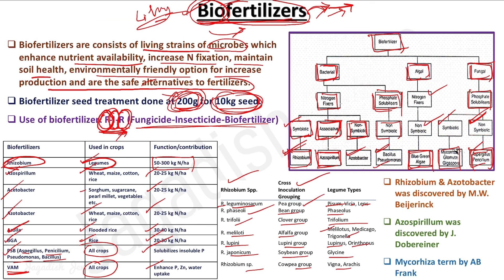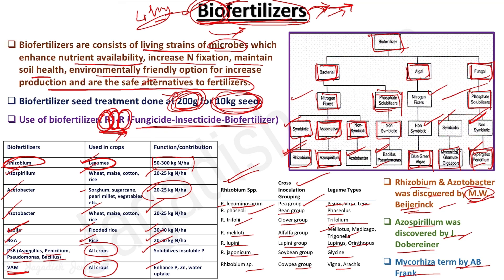Rhizobium and Acetobacter were first discovered by M.W. Beijerinck. Remember these scientist names as they are important in competitive exams. You also need to remember the cross-inoculation groups and the nitrogen-fixation capacities of each biofertilizer. Azospirillum was discovered by Joao Dobereiner. Mycorrhiza — the term was given by A.B. Frank. This was a brief overview of biofertilizers.